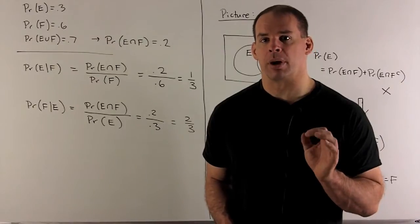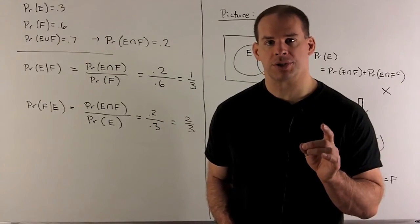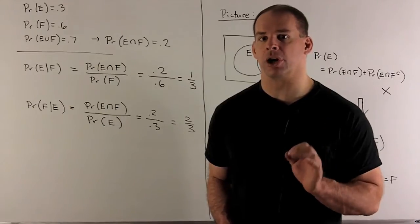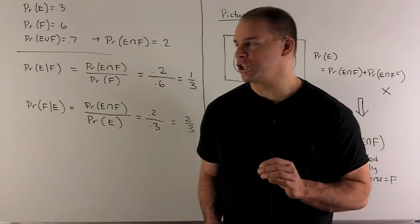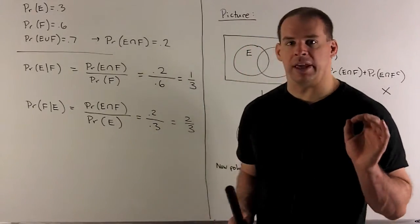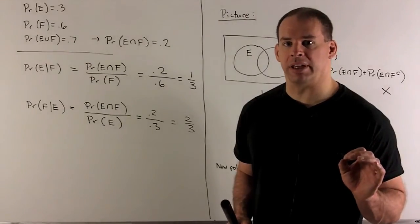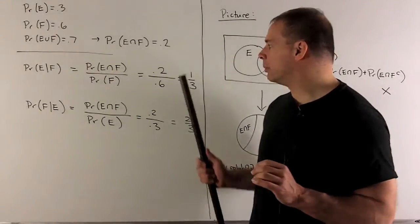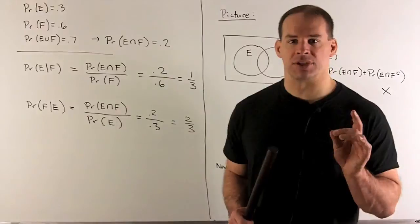Let's look at the conditional probabilities. First, conditional probability of E given that F occurs. Now definition, it's going to be probability of the intersection divided by the probability of F. So we'll have 0.2 over 0.6 gives us one-third.